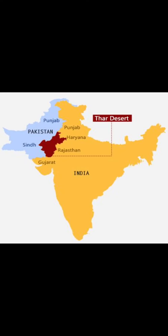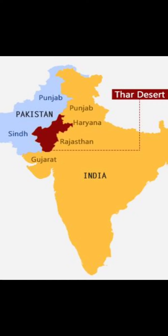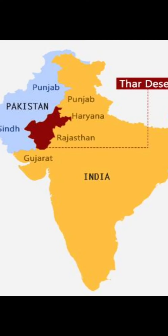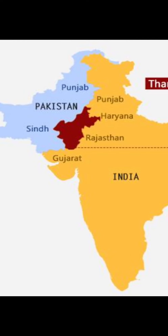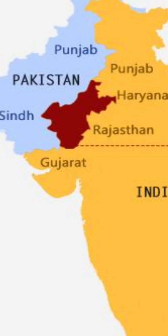In this map you can see the red colored portion — that is the area covered by the Thar Desert. The Thar Desert covers areas of Gujarat, and you can also see the Punjab and Haryana borders. It covers most of western Rajasthan, and the Great Indian Desert also extends into Pakistan, as you can see on the map.